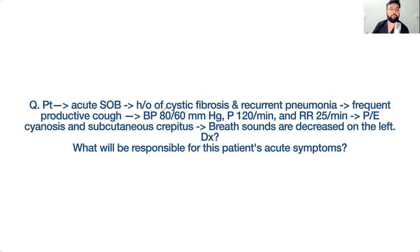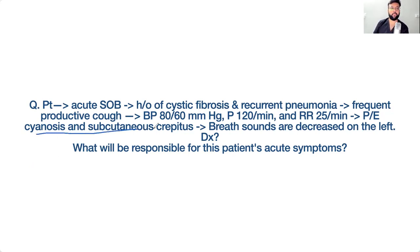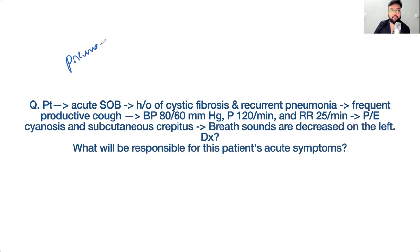A patient presents with acute shortness of breath and a history of cystic fibrosis and recurrent pneumonia. He has frequent productive cough. BP is 80/60, pulse 120, respiratory rate 25. Examination shows cyanosis and subcutaneous crepitus. Breath sounds are decreased on the left. The diagnosis is pneumothorax — specifically tension pneumothorax, not pneumonia or pleural effusion.